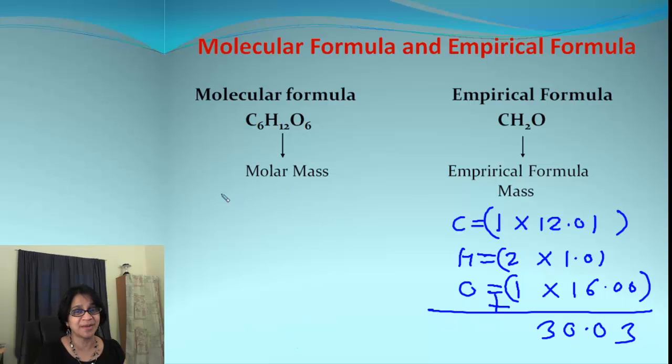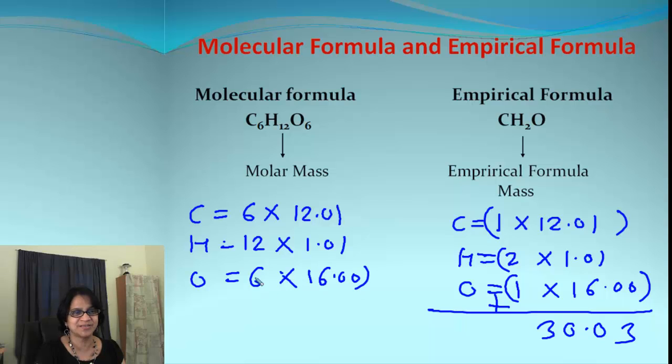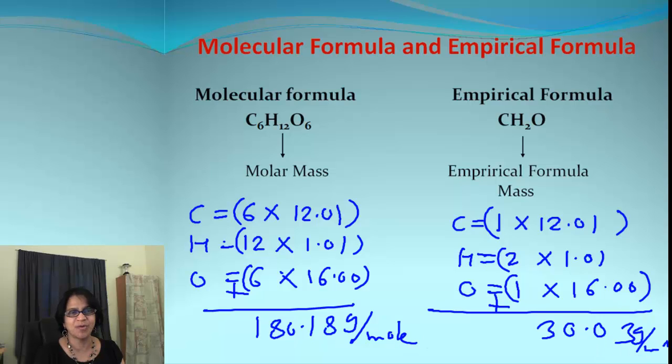And how do we get the molecular formula mass again, molar mass? We have 6 carbon atoms. So it will be 6 times 12.01. Then we have hydrogen 12 times 1.01 and we have 6 oxygen atoms. So it's 6 times 16.00. There we go. When we multiply and add all of those, what we get is 180.18 grams per mole. And this is grams per mole.